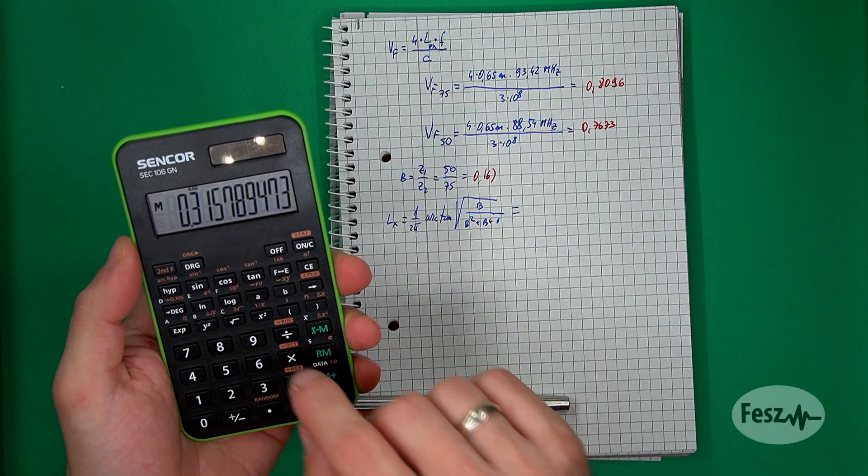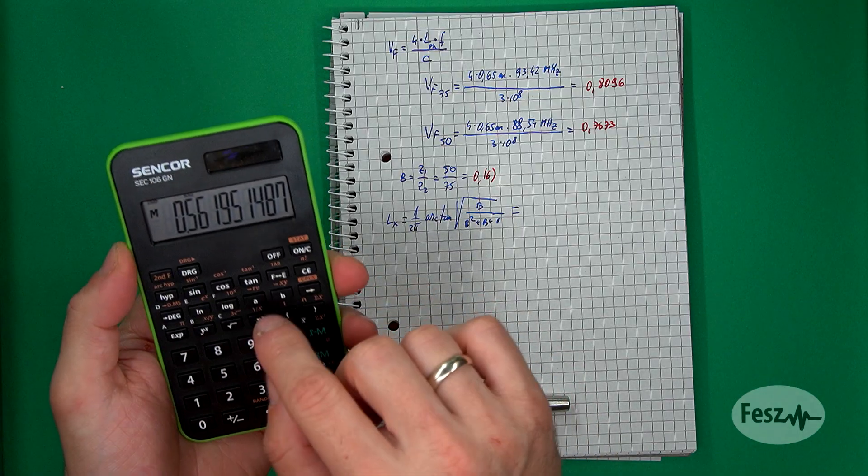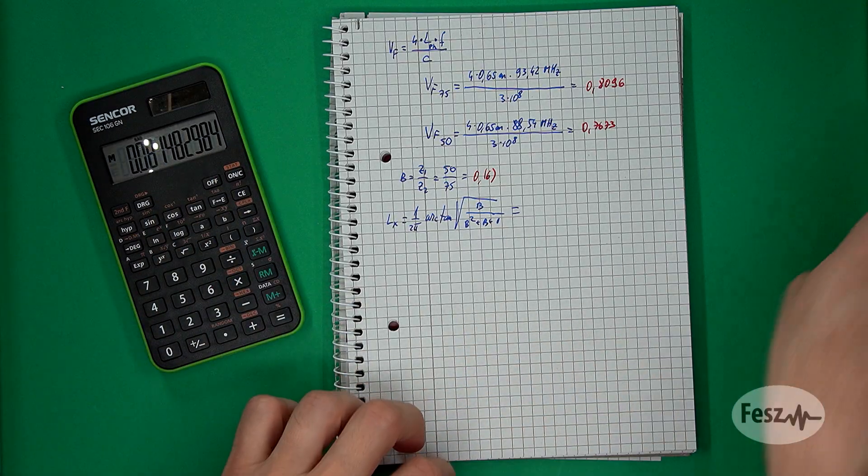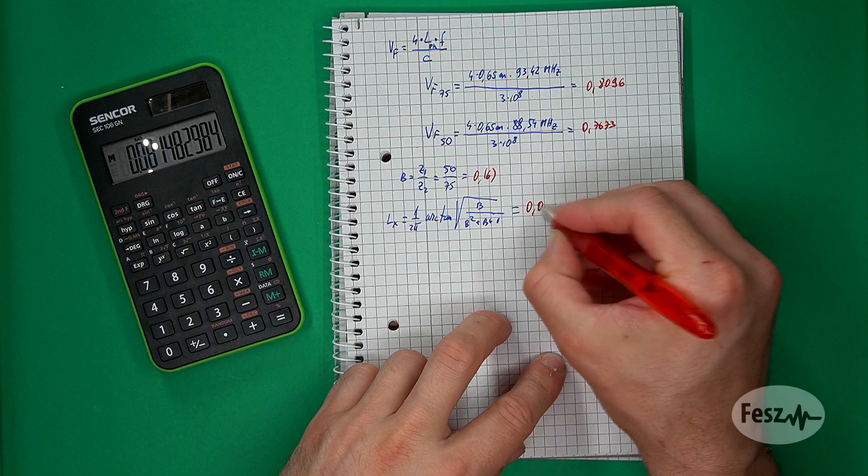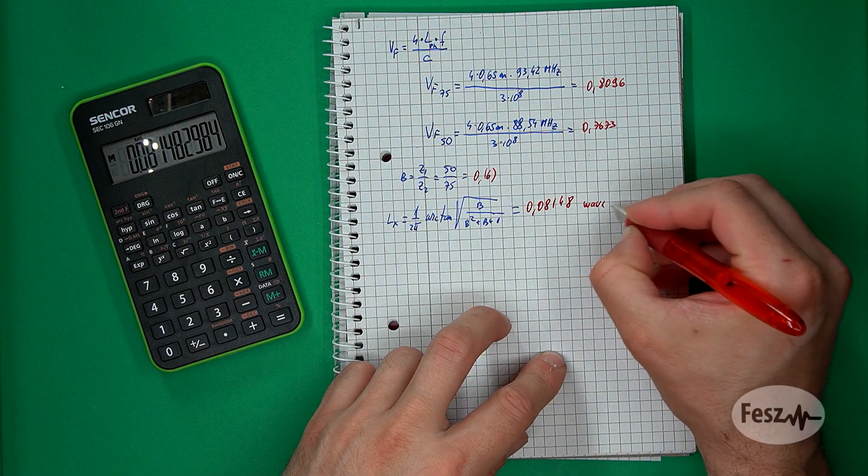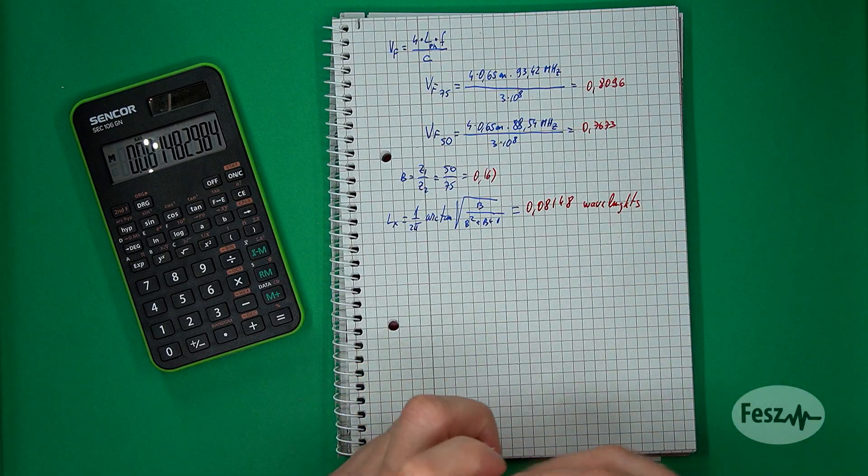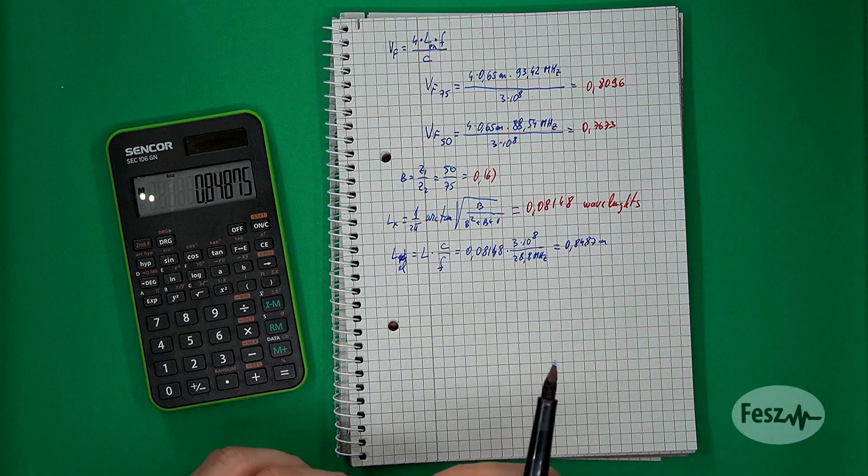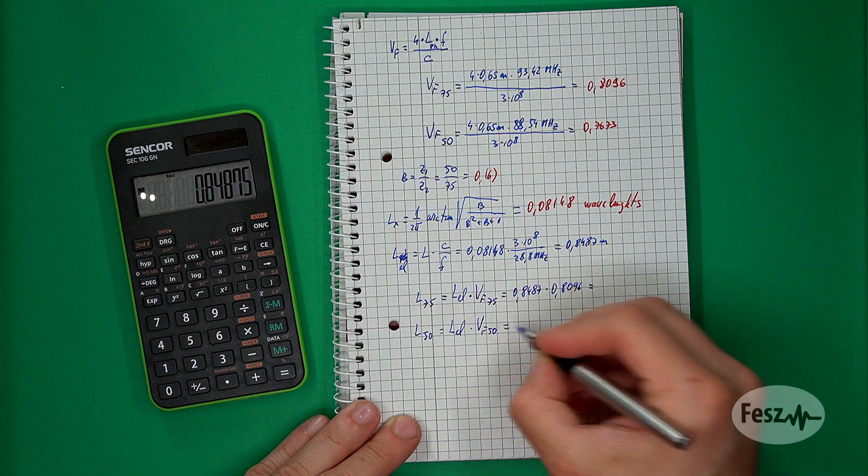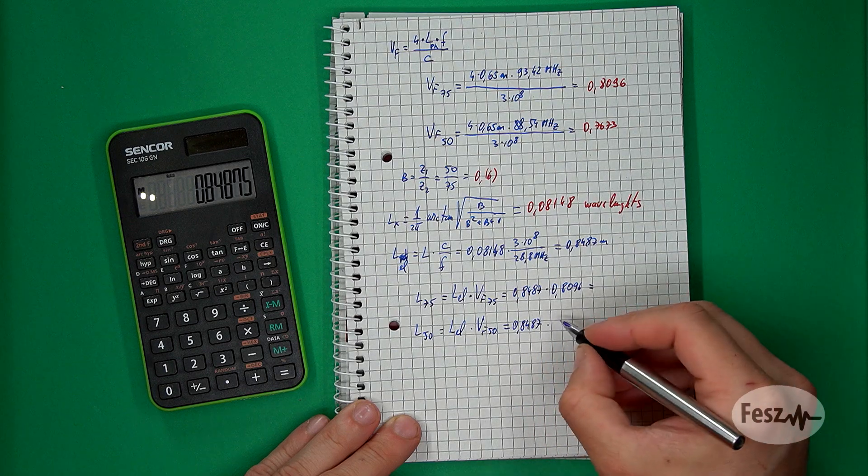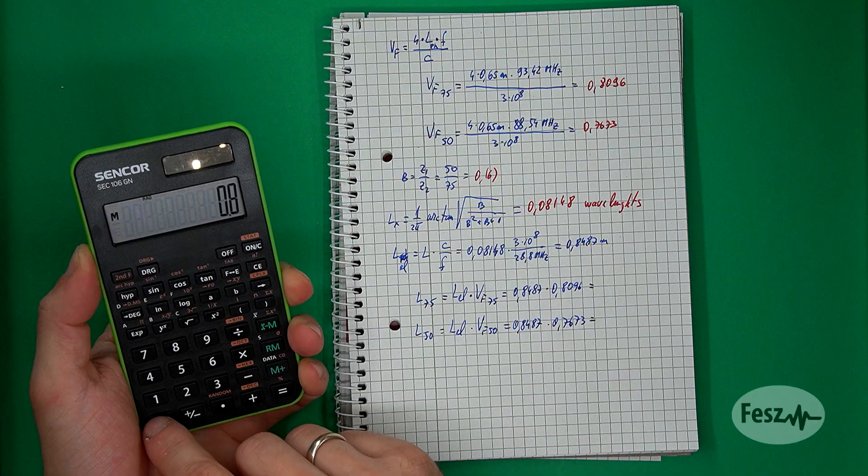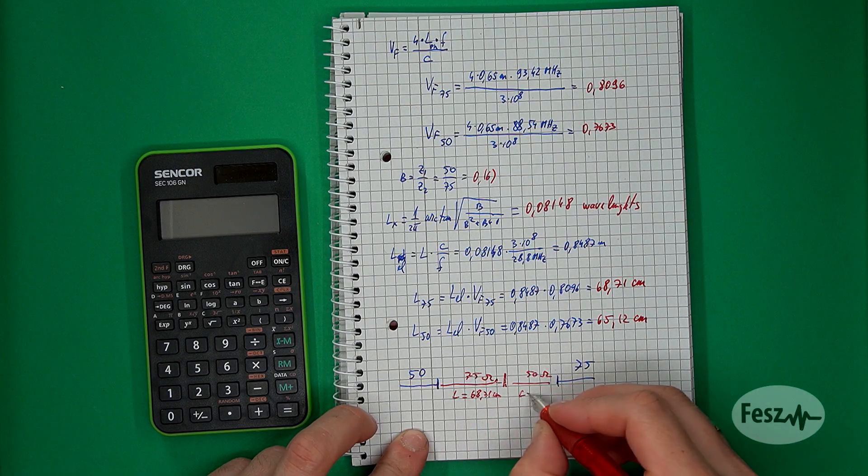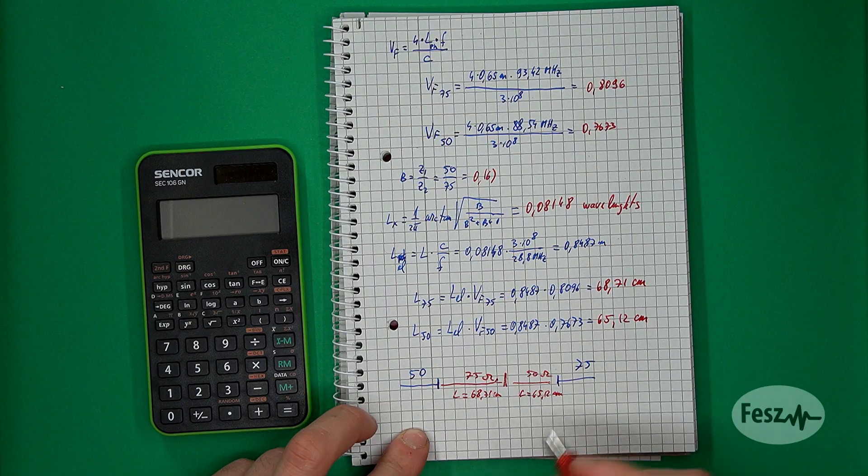To create a twelfth wavelength matching transformer for a given frequency, let's say 28.8 MHz, the center of the 10-meter band that can match 75 ohm to 50 ohm cables, we need to first calculate the electrical lengths using the fancy formula. This gives us a value of 0.08148 wavelengths. This then needs to be converted into an electrical length at the frequency of interest, thus yielding 0.848 meters. From this, we can now determine the cable length needed using the velocity factors that were measured. After a bit of calculation, we can say that the structure needed is the following: a 68.7 cm section of 75 ohm cable with a 65.1 cm section of 50 ohm cable. Let's see if this holds true.